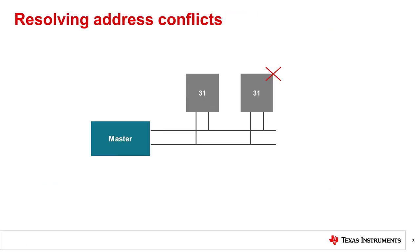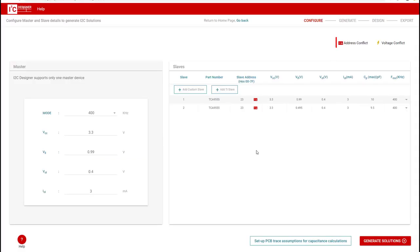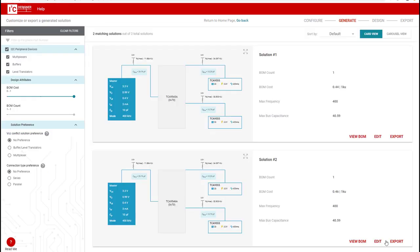The first design challenge is to ensure the I2C bus does not experience address conflicts. As the I2C standard states, slave addresses must be unique in order to prevent data corruption during read transactions. The I2C Designer tool will look for any address conflicts and present workarounds in the case of address conflicts with the use of an I2C switch or MUX.